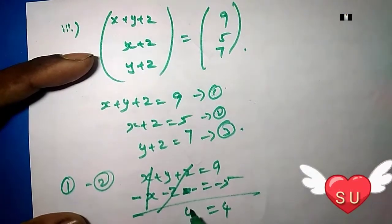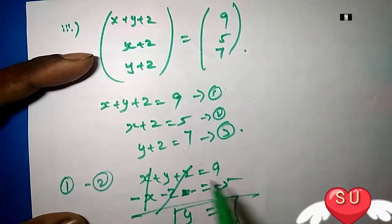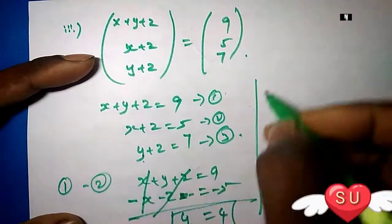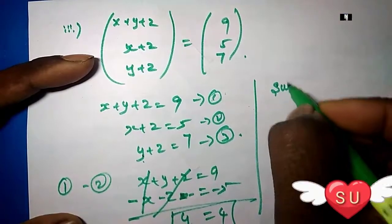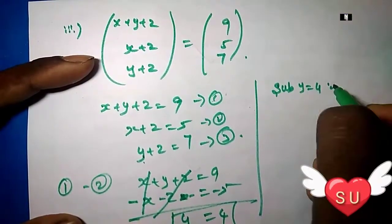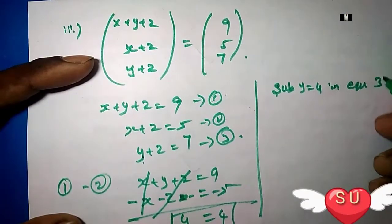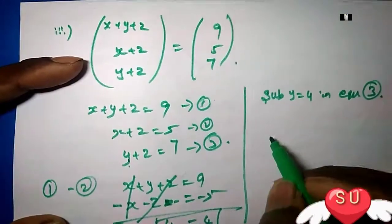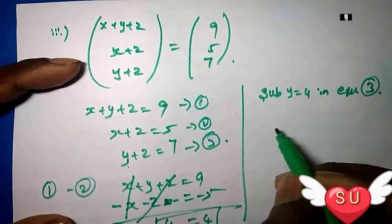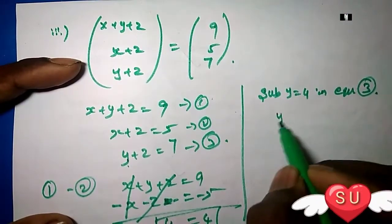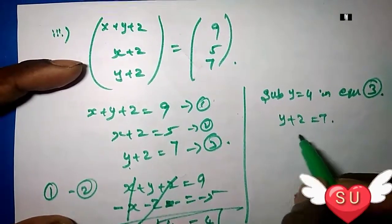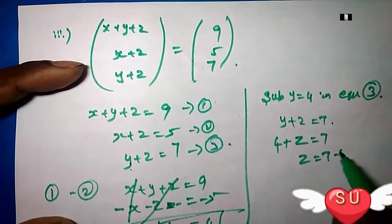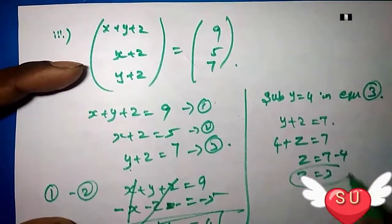So y equals 4. Now substitute y equals 4 into the third equation. So y plus z equals 7 becomes 4 plus z equals 7, giving z equals 7 minus 4, so z equals 3.